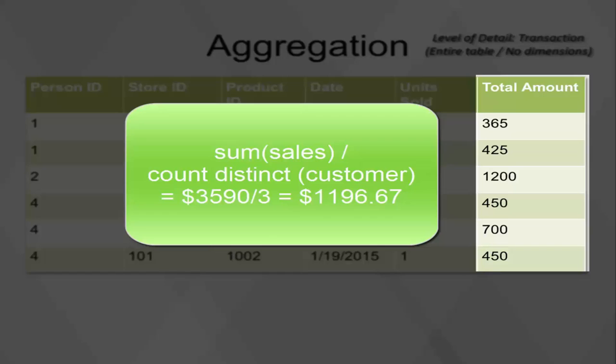Pay special attention to how the average function works. It uses the sum of the field divided by the number of rows, so it can't be used in averages such as this, where the denominator is not the number of rows.